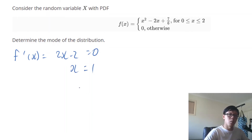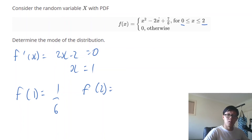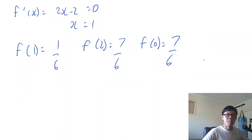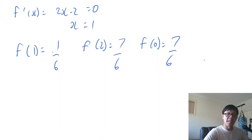So let's check the probability density — the y value — at x = 1. f(1) gives us 1/6. Now that's the first thing we need to check, but we also need to check our lower boundary and upper boundary. f(2) gives us 7/6, and f(0) gives us 7/6. So in this case, we can clearly see that the stationary point gives us a lower probability density than these two boundary values.